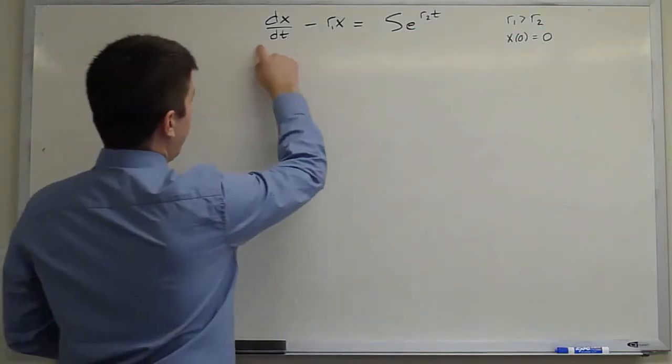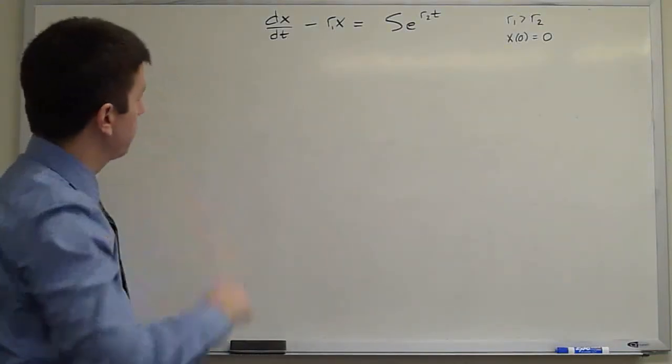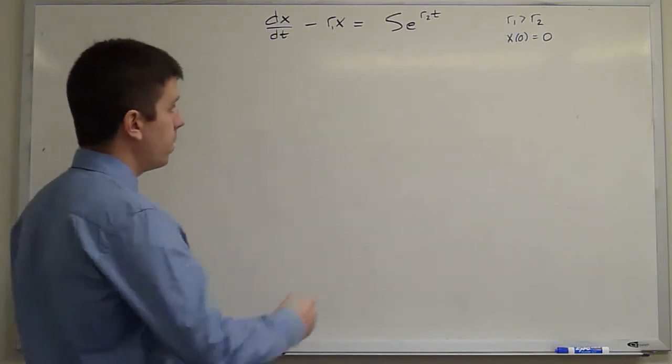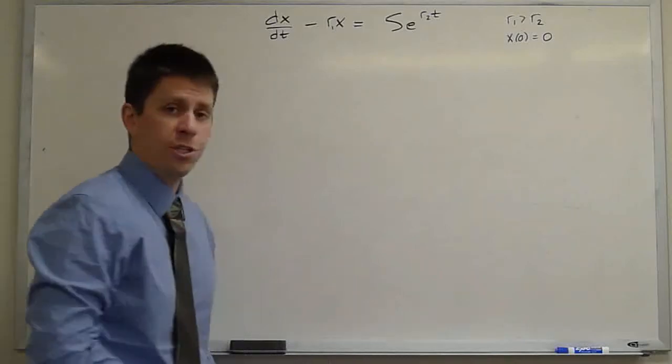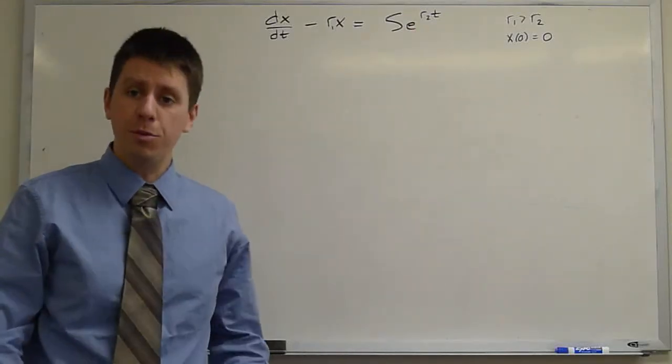We have a constant coefficient left-hand side, a constant coefficient linear operator we could call it. And on the right-hand side we have a forcing term which is of a relatively simple form, a simple exponential.